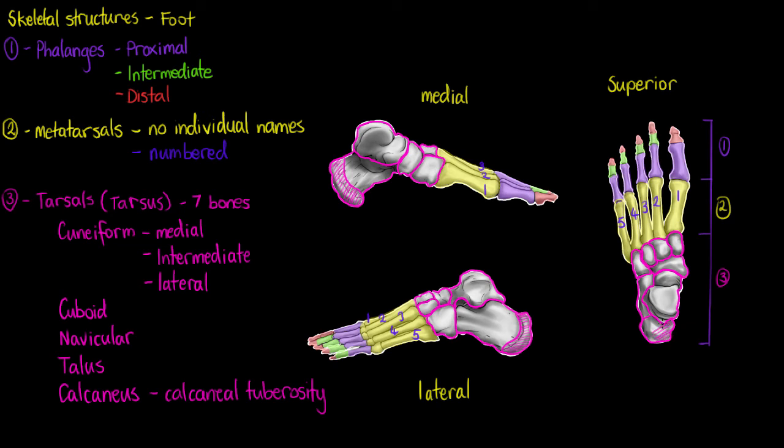So we can see it here from the superior. It's this segment that is posterior to our talus. And it's going to be a point where we insert quite a few of the tendons from the muscles of our leg. So it's a tendon attachment point.